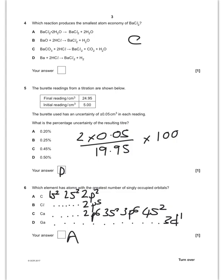For question 6, I've put the electronic configurations there. Which has the greatest number of single occupied orbitals? The answer is going to be carbon. Carbon has 2p2, and so each of those electrons is going to be in a different 2p orbital, and therefore it's going to have two unpaired electrons. All the others either have no unpaired electrons or they only have one unpaired electron.